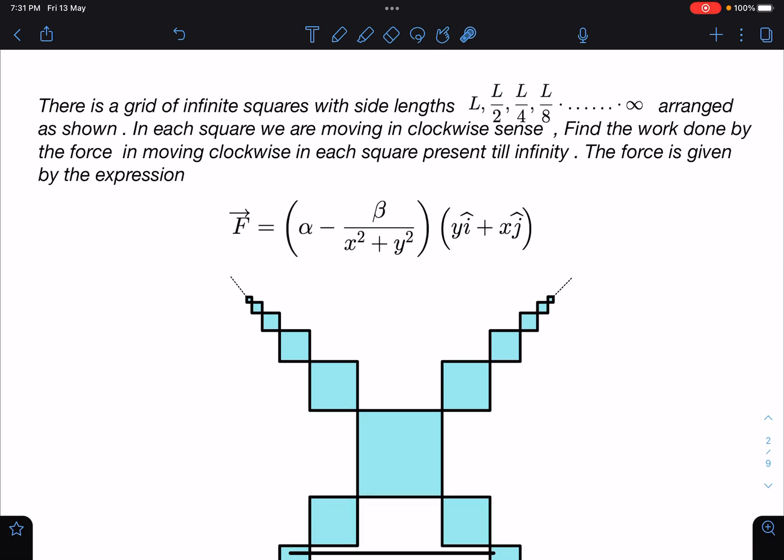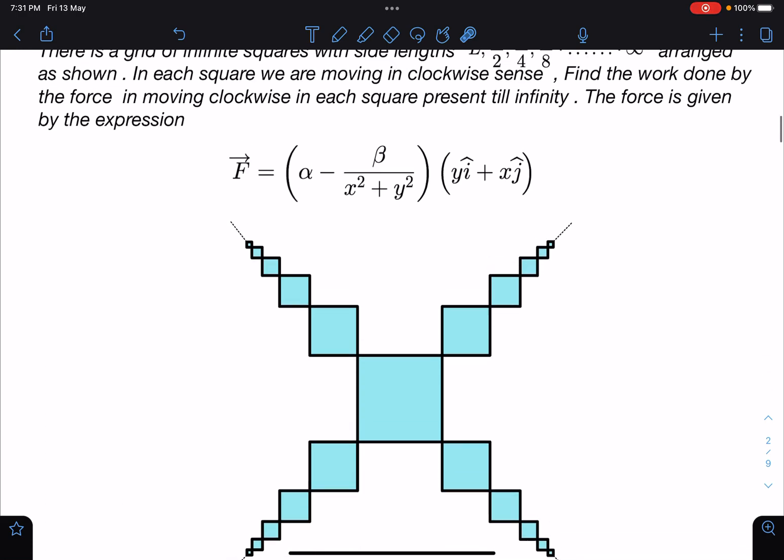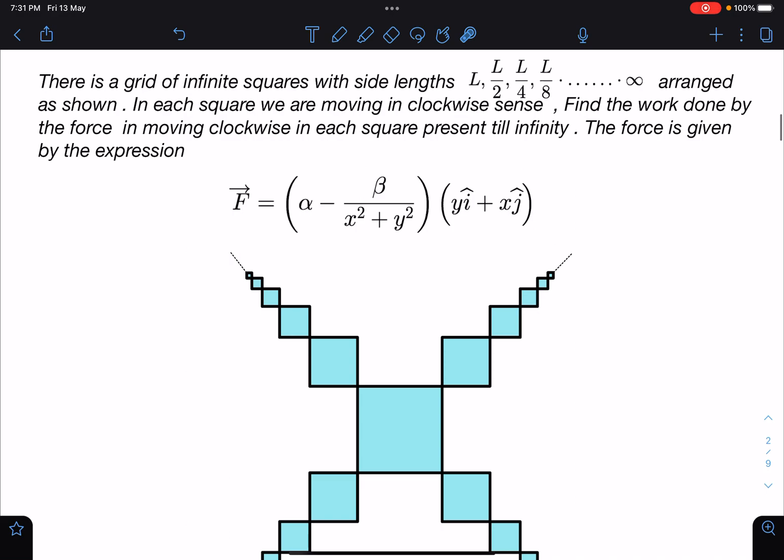Here is the problem: There is a grid of infinite squares with side lengths L, L by 2, L by 4, L by 8 until infinity, arranged as shown. In each square we are moving in clockwise sense. Find the work done by the force in moving clockwise in each square, so clockwise we are moving here, here, here, and in every single square we are moving in clockwise sense till infinity.